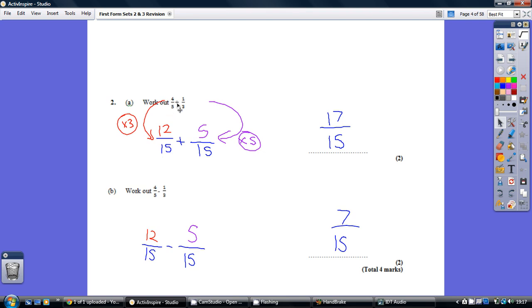Now we need to convert this first fraction, 4/5, into something over 15. What have we done to that 5 to scale it up to 15? Well, we've timesed it by 3. 5 times 3 is 15. So to keep the fraction the same, we've also got to times the top number by 3. 4 times 3 is 12. Same process over here. How have we turned that 3 into 15? Well, we've timesed it by 5. So also times the top number by 5. 1 times 5 is 5.